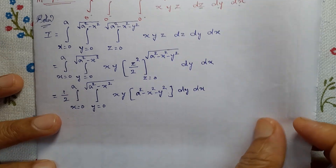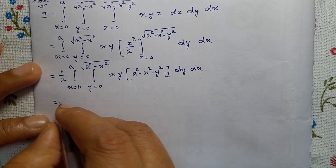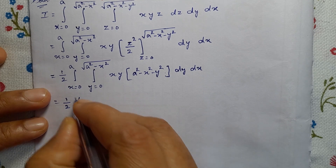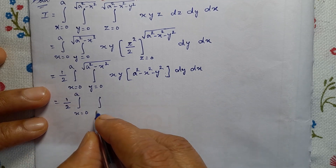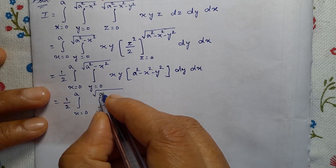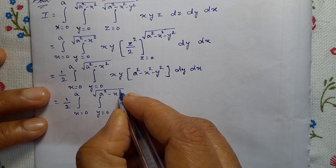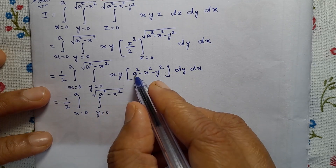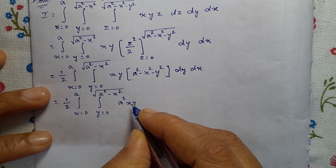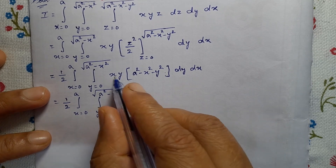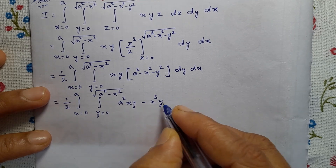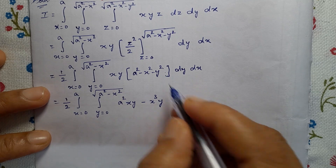Next, equal to 1 by 2, integral of X equal to 0 to A, integral of Y equal to 0 to square root of (A squared minus X squared).